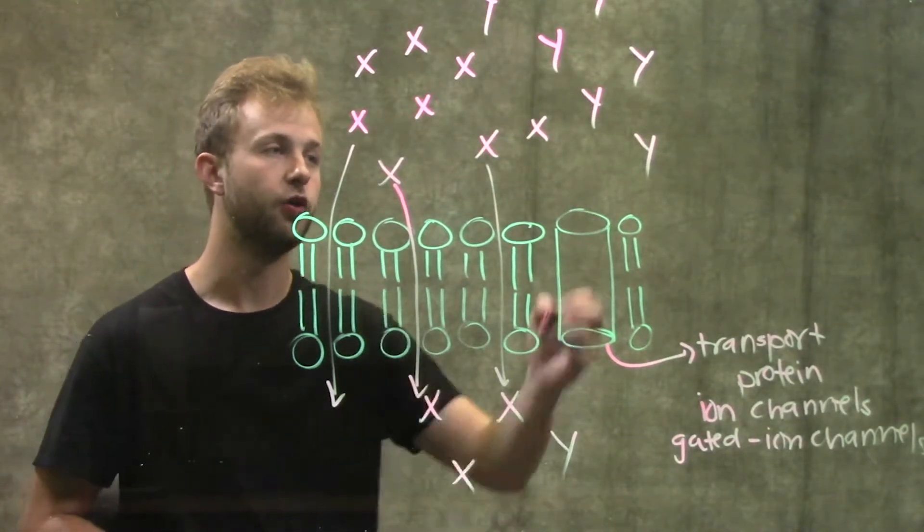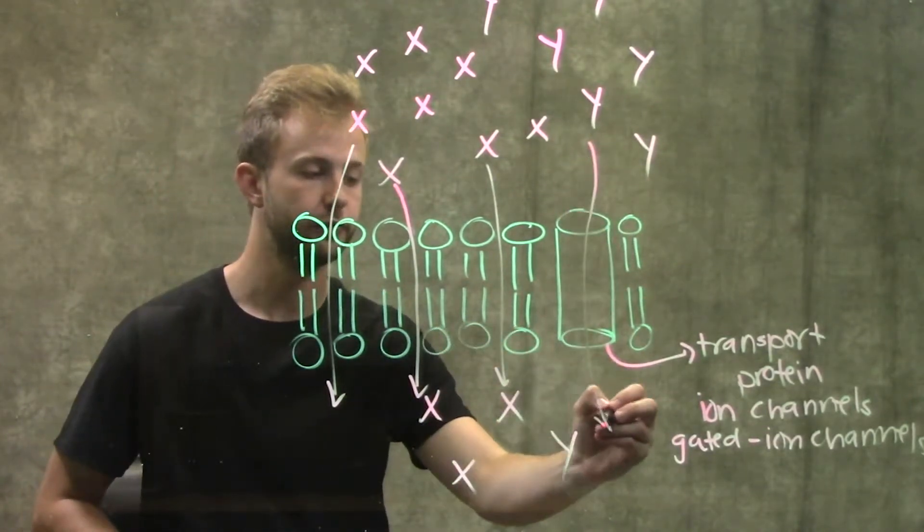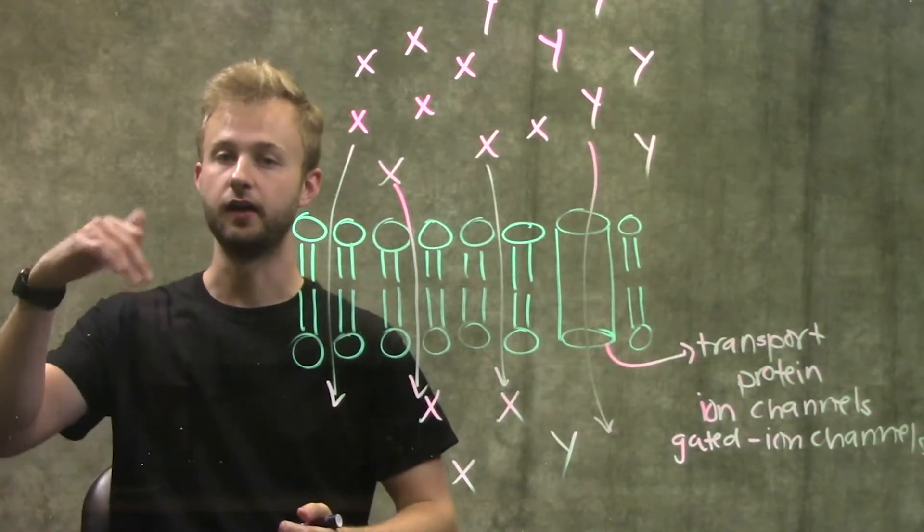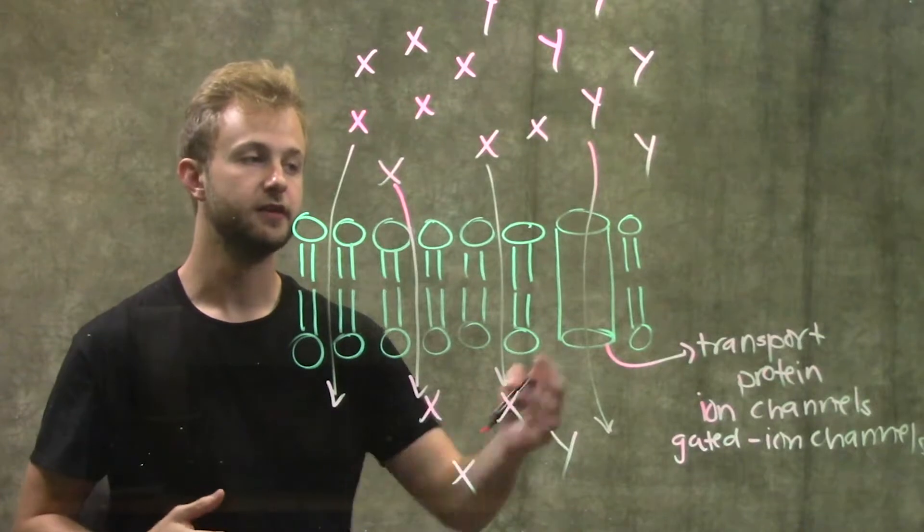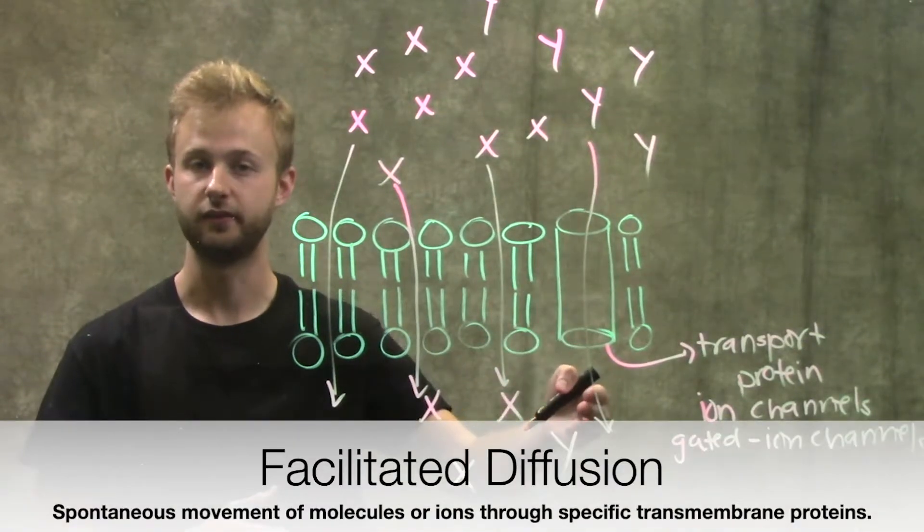But when they're open, these molecules can go through that channel from the side with the higher concentration to the side with the lower concentration. And this process is called facilitated diffusion.